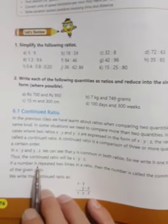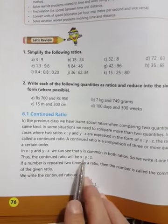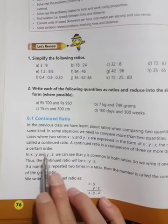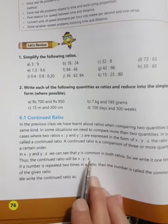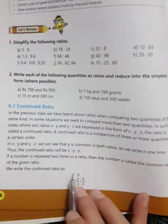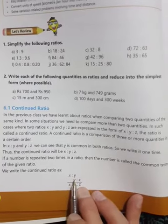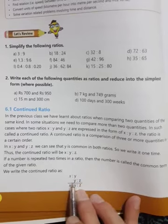If we want to write x ratio y and y ratio z as one continued ratio, we can write it as x ratio y ratio z. We normally write it like this, with y being common between the two ratios.